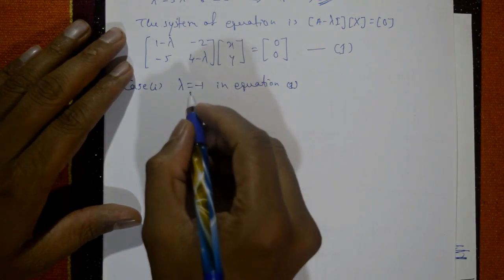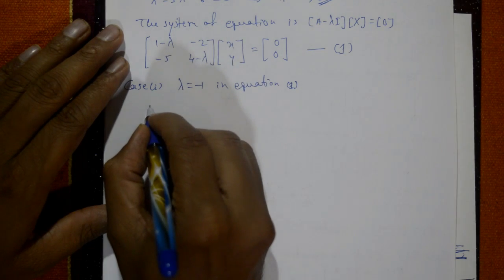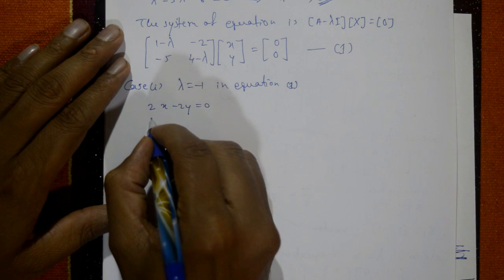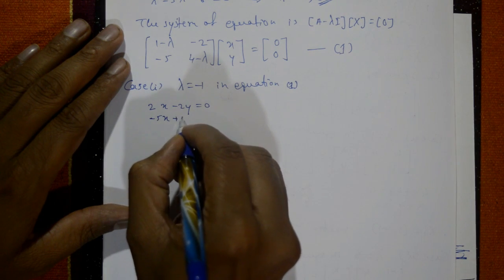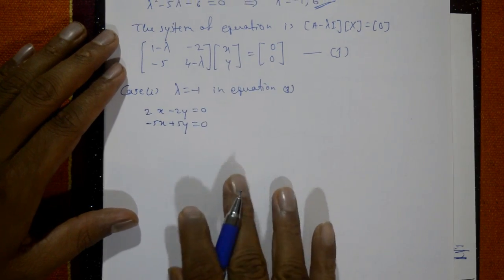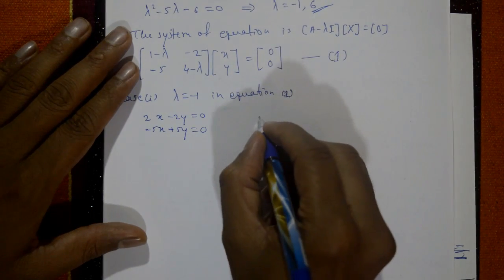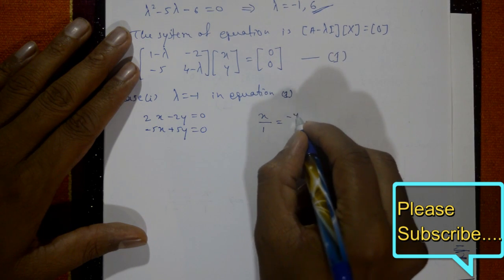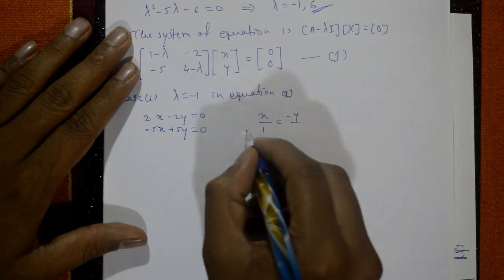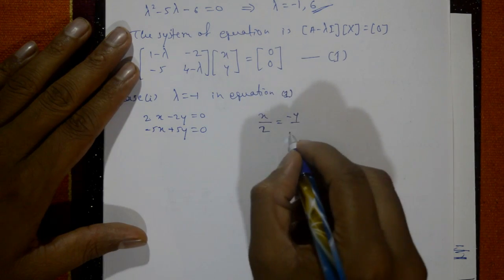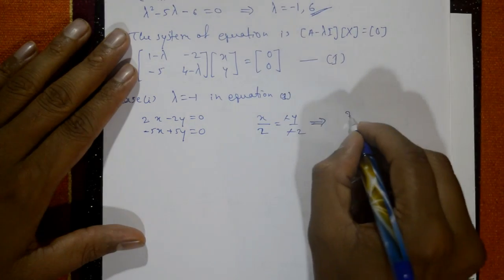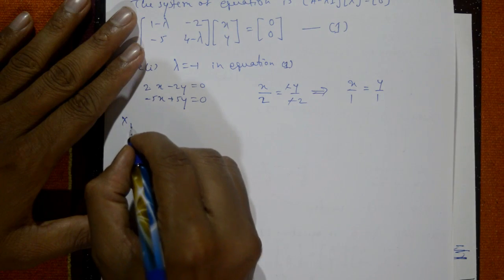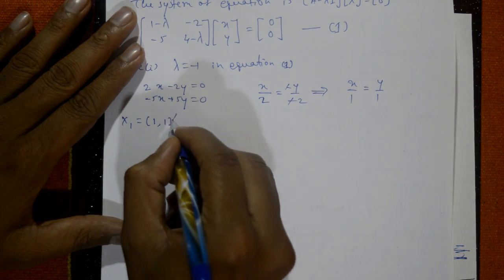Substituting λ = −1 gives: 2x − 2y = 0 and −5x + 5y = 0. Taking any one equation, 2 is a common factor, so x = 1 and y = 1. The first eigenvector is the column matrix [1, 1].